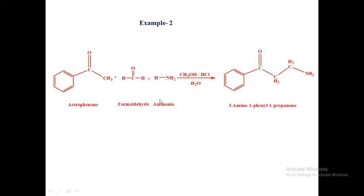In the second example, we use acetophenone. This ketone contains an alpha-hydrogen: the functional group is attached, the adjacent carbon is the alpha-carbon, and the hydrogen attached to the alpha-carbon is the alpha-hydrogen. Acetophenone is reacted with formaldehyde and ammonia in the presence of methyl alcohol and hydrochloric acid to form 3-amino-1-phenyl-1-propanone.